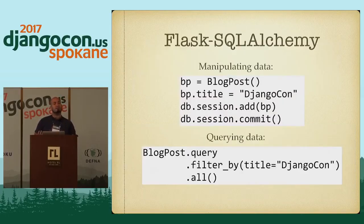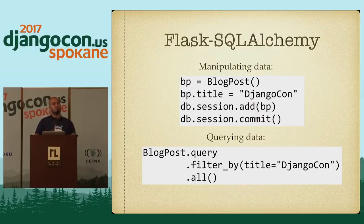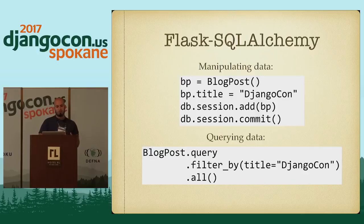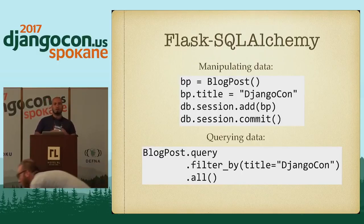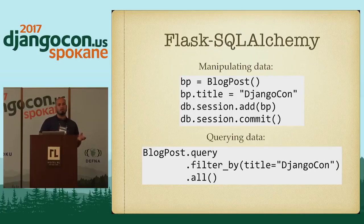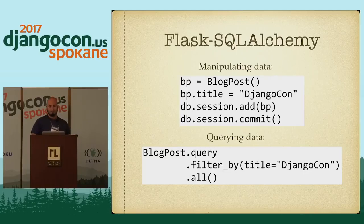So now that you have this db object, you can do some very familiar things with it. Here I'm defining a blog post data model, and you can see that it looks very familiar to the same sort of thing that you would do with the Django ORM. They're not identical, but they're very similar to each other. If you've used the Django ORM, you can use SQLAlchemy in almost the same way. You can also manipulate data in very similar fashions — create an instance of a blog post class, assign information to it, and then instead of calling .save on it, you add it to the database session and commit the session. SQLAlchemy is just making you be a little bit more explicit with how the database interaction works. And you can query data in the same way — you do .query instead of .objects, and you can do .filter or .filterBy.